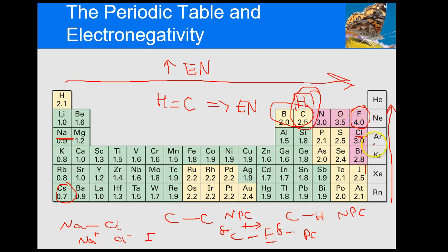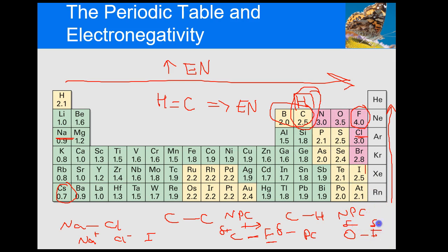That's how you use the electronegativity table — you don't really have to worry about the exact numbers. For example, if you have nitrogen attached to fluorine, you can tell it's going to be polar. If I give you an oxygen attached to iodine, it's obvious that's a polar bond — oxygen is closer to fluorine so it's more electronegative, giving it a partial negative charge, and iodine becomes partial positive. Based on electronegativities, you can figure out if it's nonpolar covalent, polar covalent, or ionic.